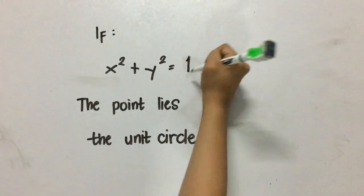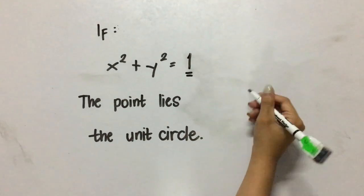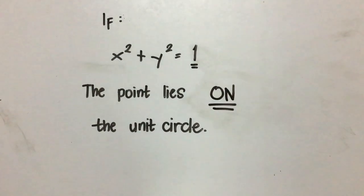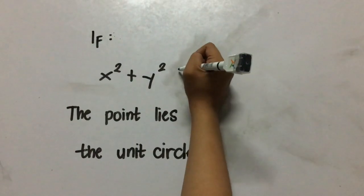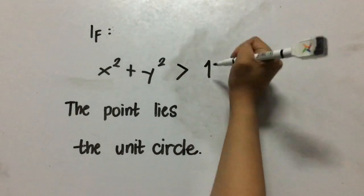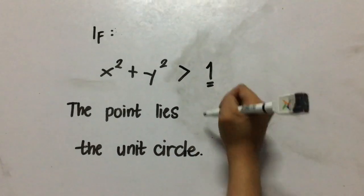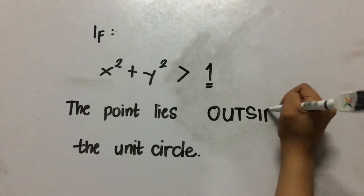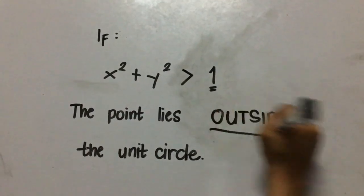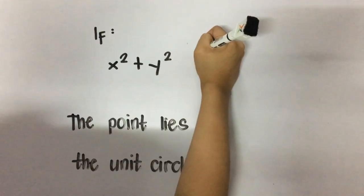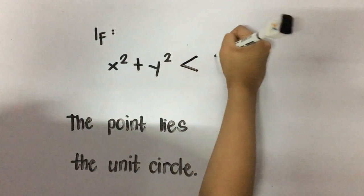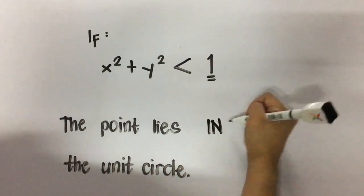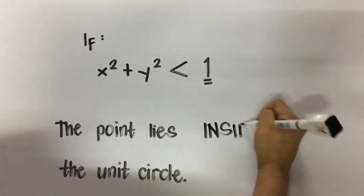The first condition is: if x squared plus y squared is equal to 1, then the point lies on the unit circle. The second condition is: if x squared plus y squared is greater than 1, then the point lies outside the unit circle. The last condition is: if x squared plus y squared is less than 1, then the point lies inside the unit circle.